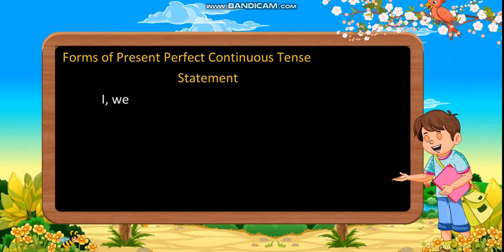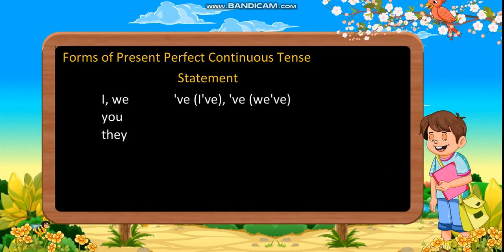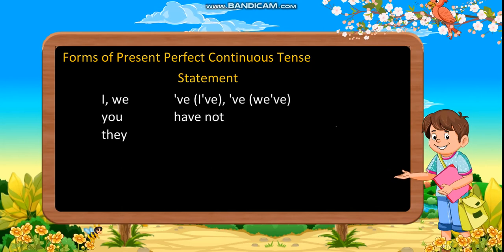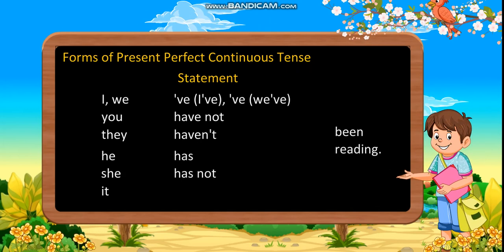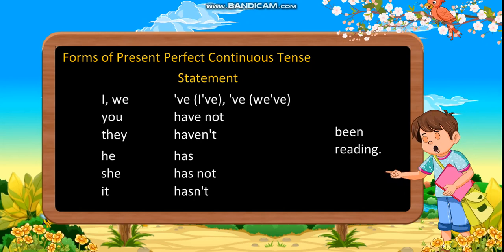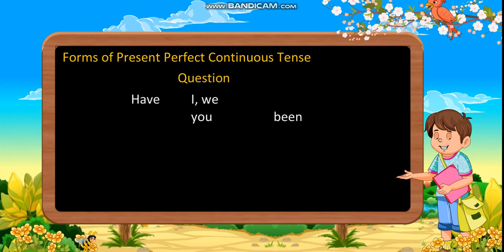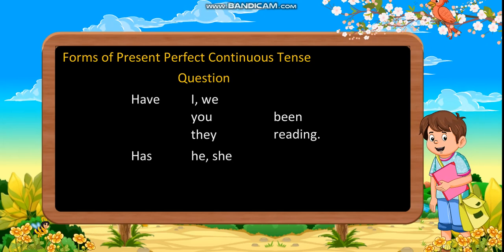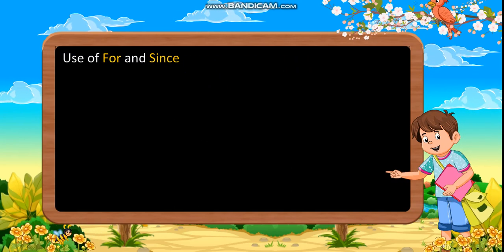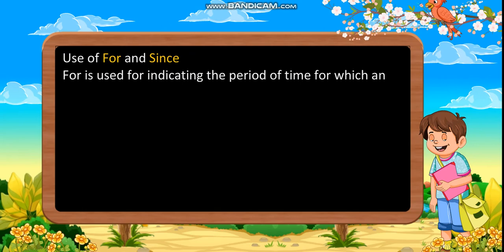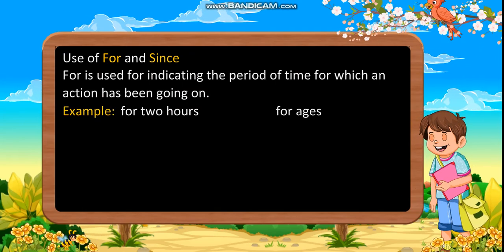Forms of present perfect continuous tense — Statement: I/We/You/They have / have not / haven't been reading. He/She/It has / has not / hasn't been reading. Question: Have I/We/You/They been reading? Has he/she/it been reading? Use of 'for' and 'since':